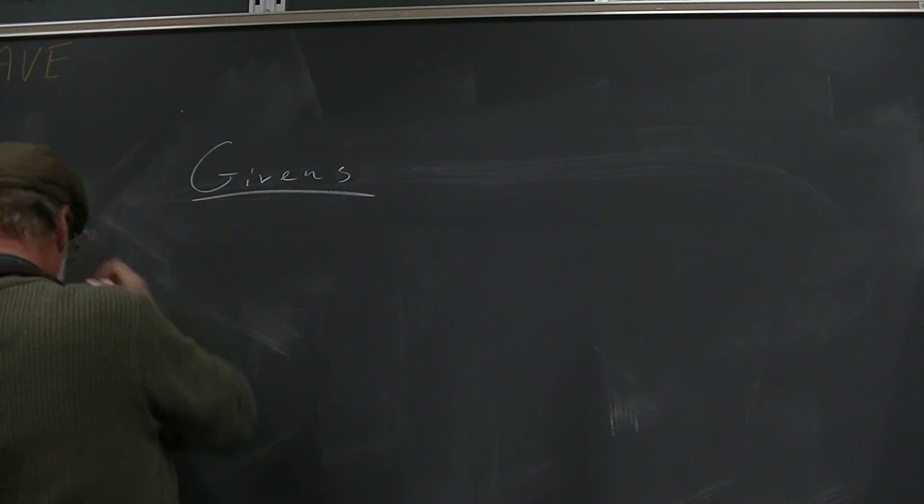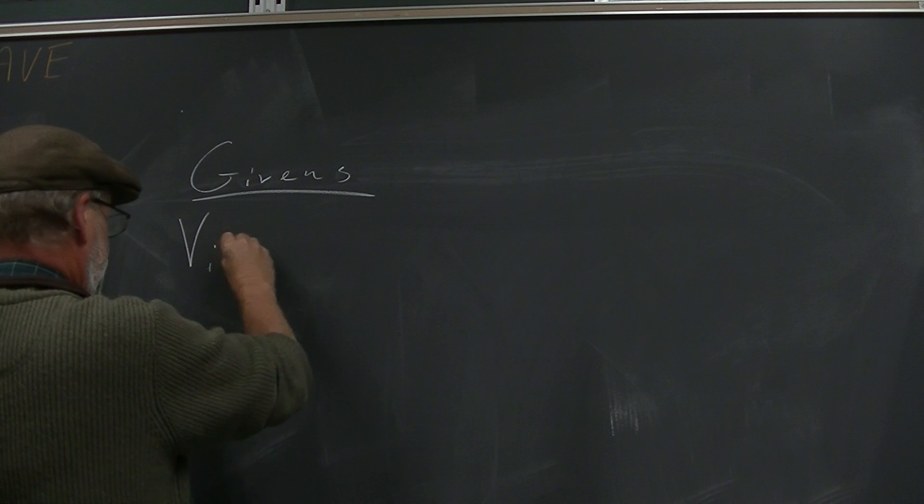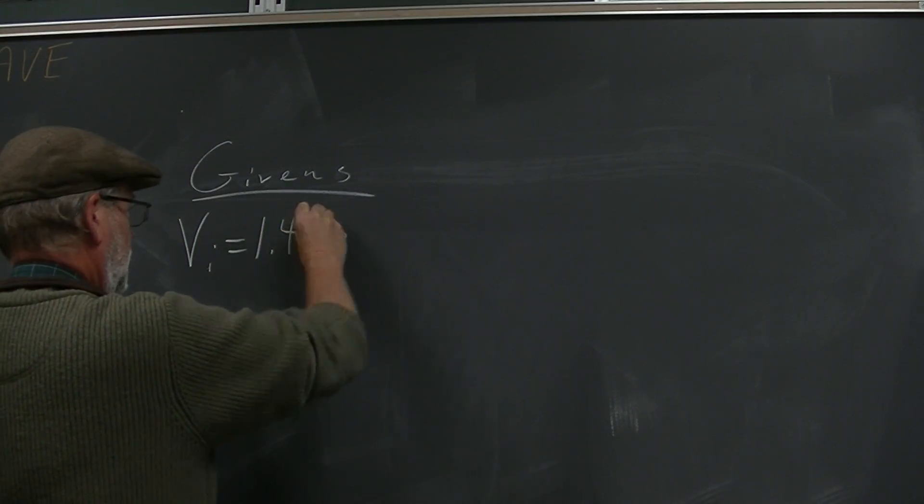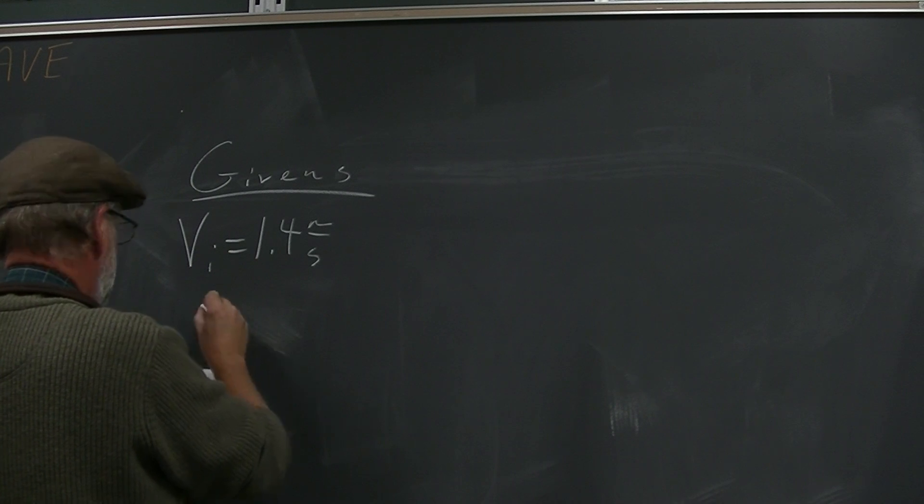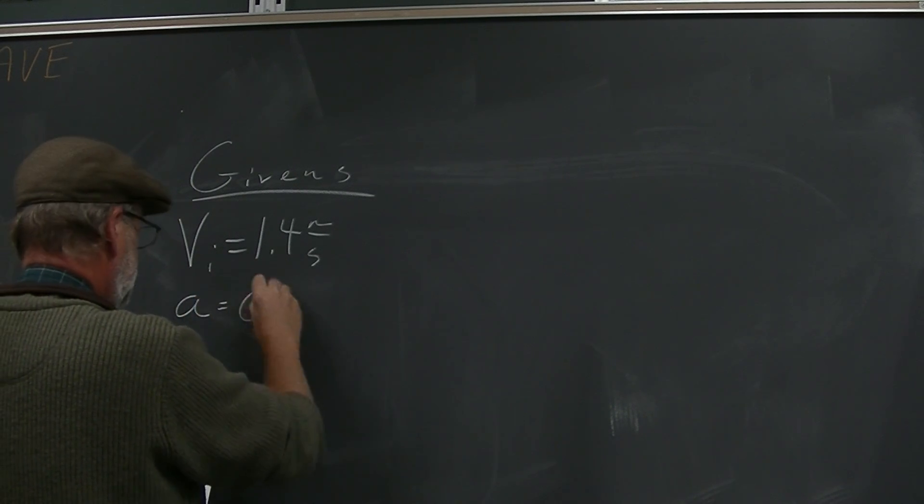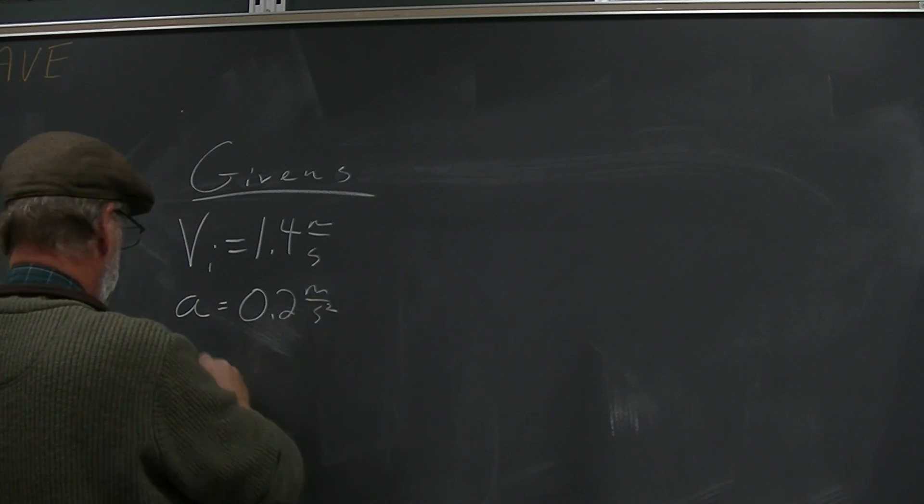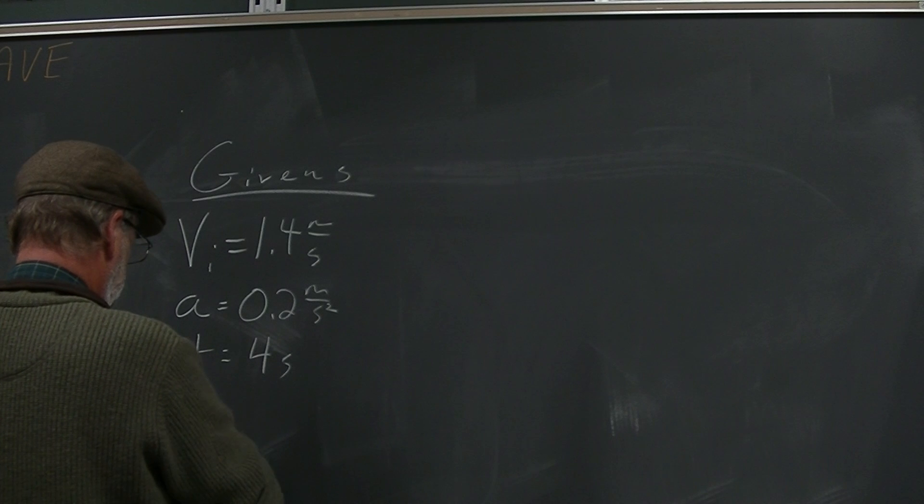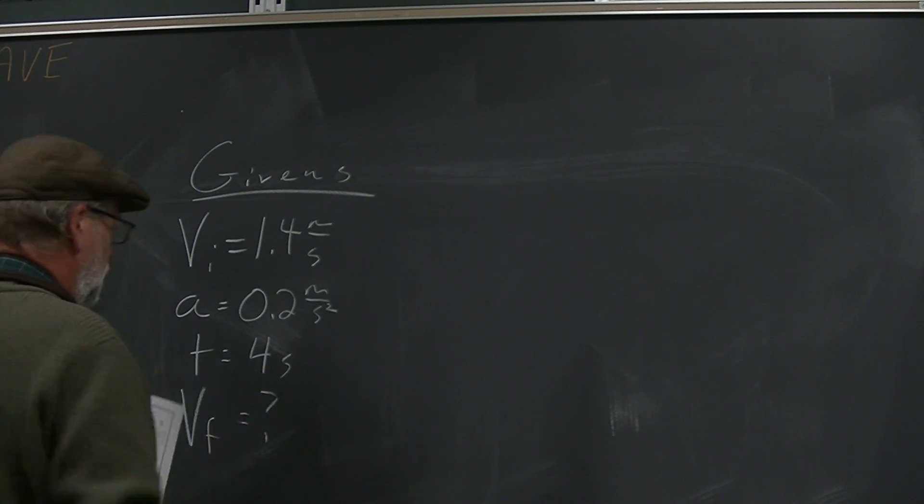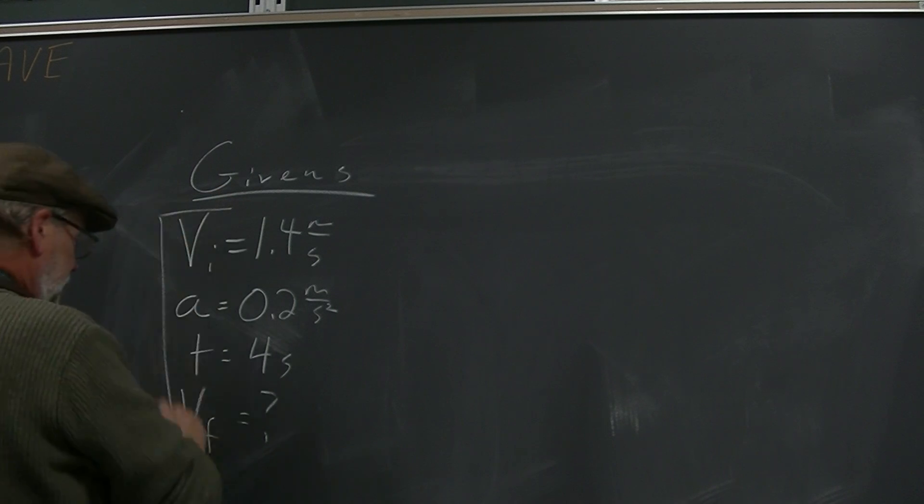Gibbens. Jot down the Gibbens. A man running, so this initial velocity is 1.4 meters per second. He sees the kid, he accelerates at 0.2 meters per second squared, and he does this for four seconds. We would like to know what the final velocity is when he does that. So if we look at these things, what is the formula?